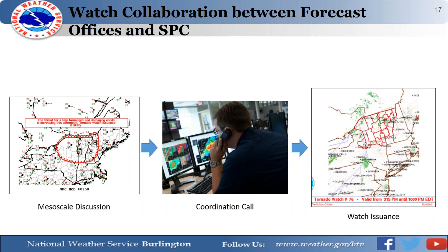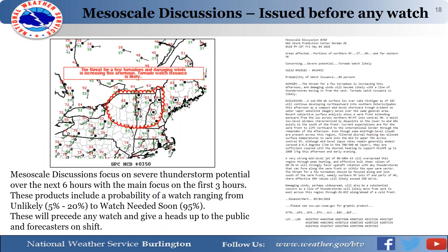The SPC collaboration process begins with them issuing a mesoscale discussion — essentially a heads-up that conditions are becoming favorable for an event. The image shown is from May 4th, 2018, one of our most significant local events. Once a mesoscale discussion is issued, there's a coordination call between the SPC and affected forecast offices — us, Buffalo, Gray, Albany — and if we determine a watch is needed, it will then be issued.